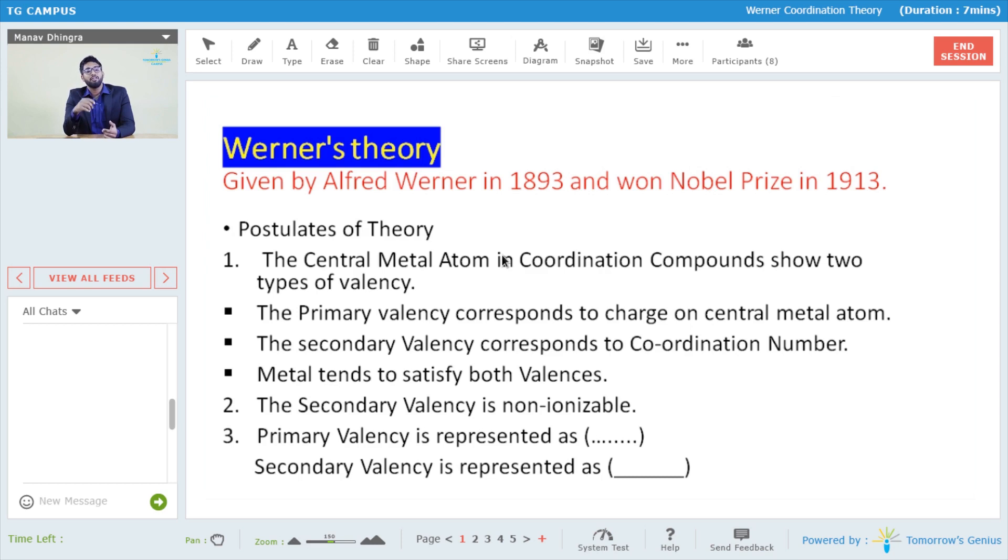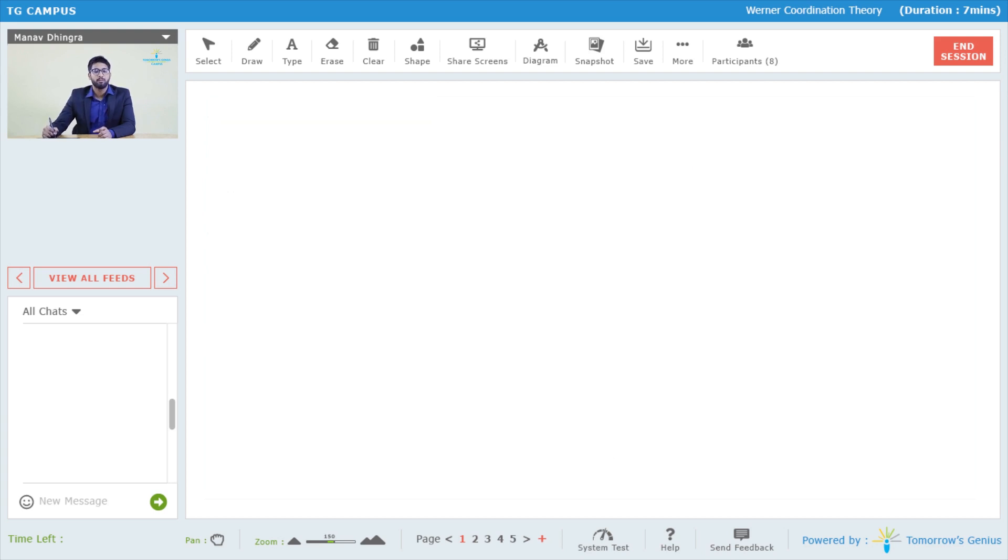We'll be studying his postulates. The first postulate he said is that a central metal atom satisfies two valencies. One is the primary valency, which is satisfied by the charge, and another is the secondary valency, which is satisfied by the ligands which donate the lone pair into the metal orbitals. He called it secondary valency and primary valency, which is ionizable.